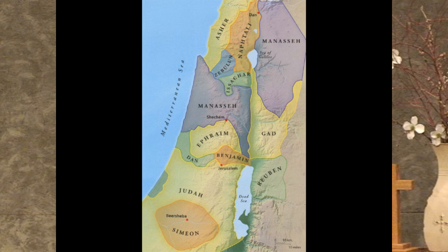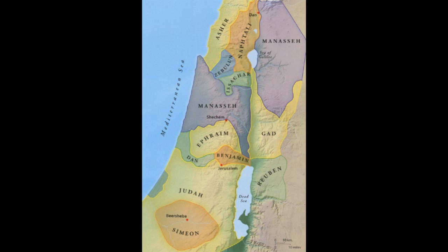Chapter 15 deals with the allotment given to the tribe of Judah. In verse 1 it begins, 'the allotment for the tribe of the people of Judah according to their clans.' It's going to define where the tribe of Judah was going to be — that's a huge area there in the south. At the end of the chapter, it talks about where they were by clan, where the individual clans resided. They kept really good records.